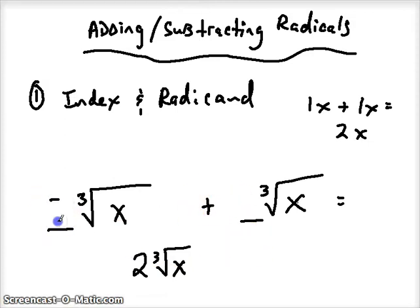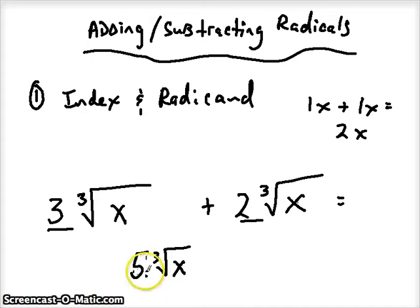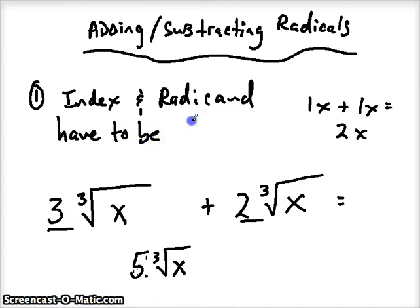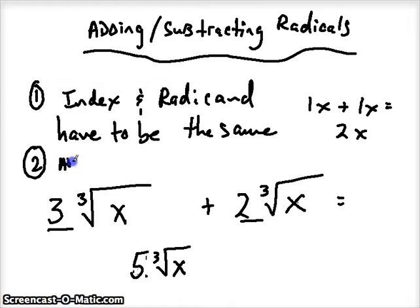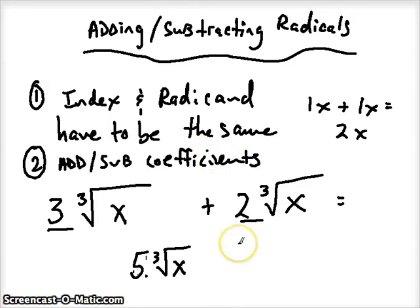If I had three cube roots of x plus two cube roots of x, how many cube roots of x do I have? I have five cube roots of x. So in order to add or subtract radicals, two things have to be true: the index and the radicand have to be the same, and then I can add or subtract the coefficients.